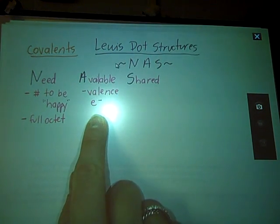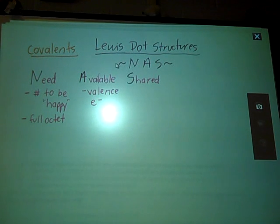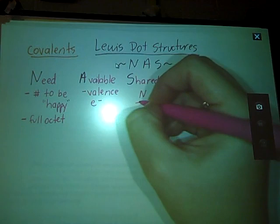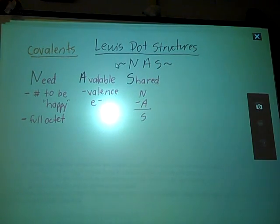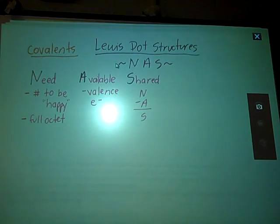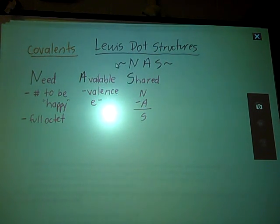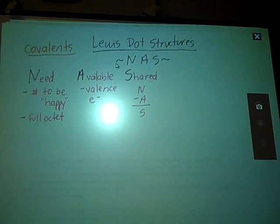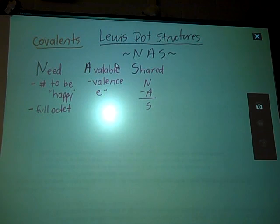Available refers to how many valence electrons we actually have available to draw in our structure. Shared is calculated as Need minus Available — this tells us how many electrons we have to share between atoms to form bonds and make the structure. The best way to show this is through example, so let's jump right in.